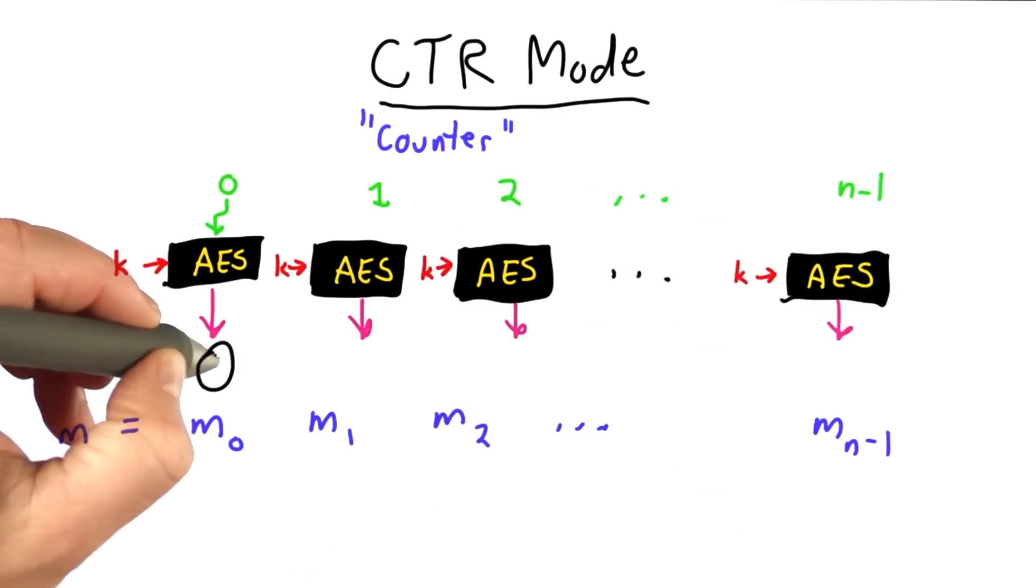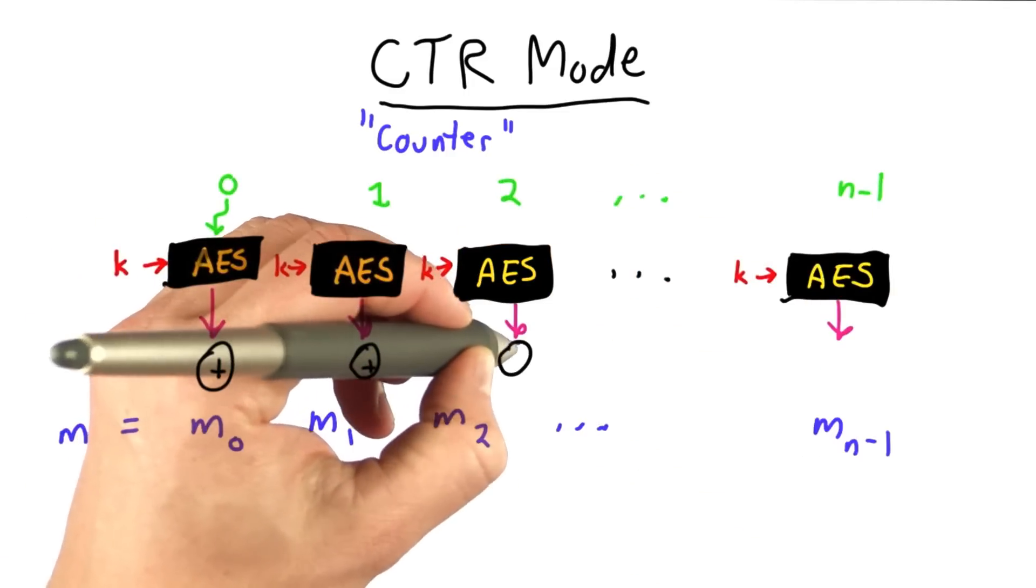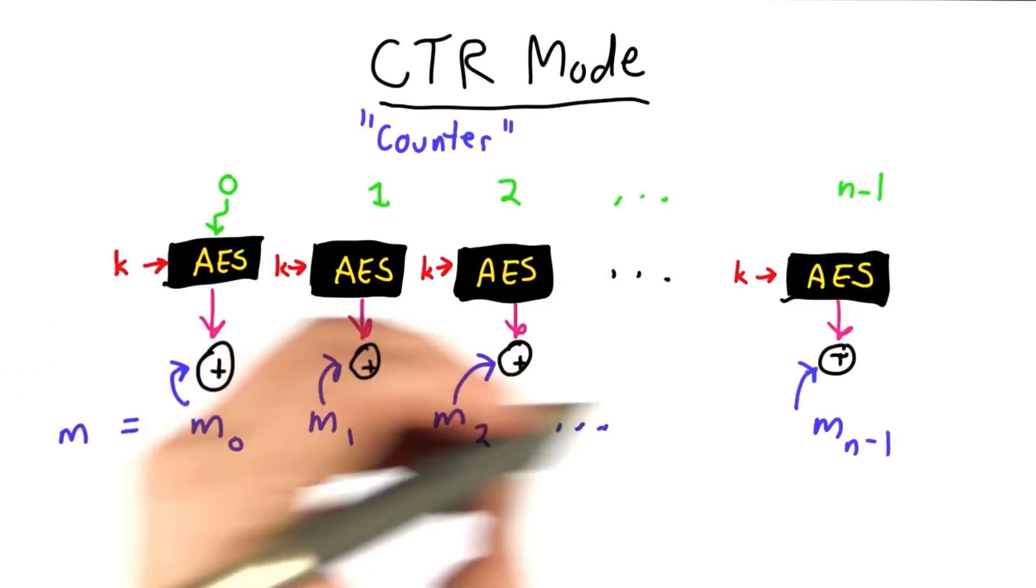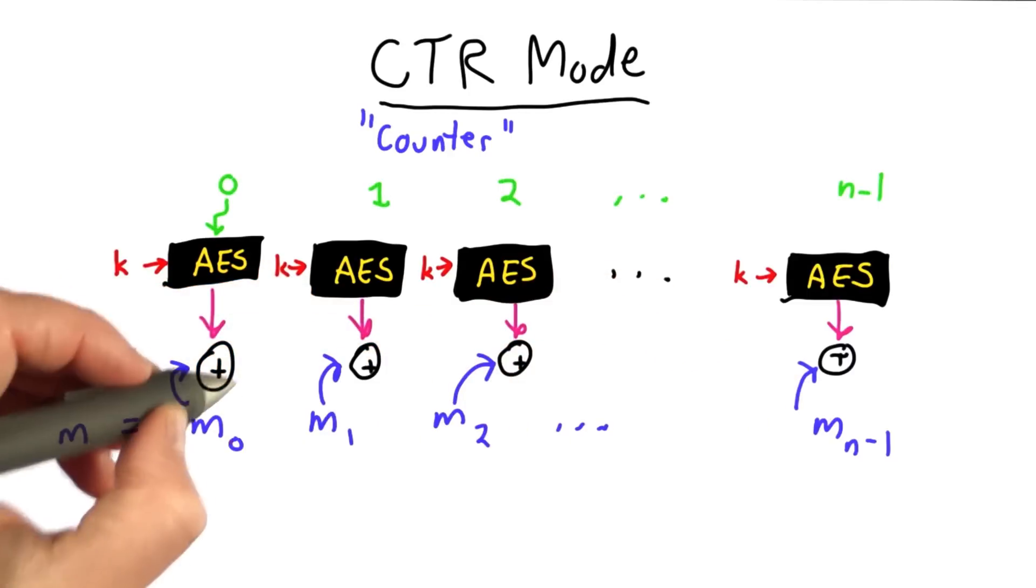What we're going to do is XOR those outputs with the message. The message blocks go into these XORs, and what comes out is the ciphertext blocks.